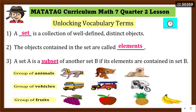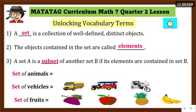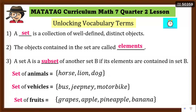Let's revisit the groups of animals, vehicles, and fruits. We can call these: set of animals — elements are horse, lion, dog; set of vehicles — elements are bus, jeepney, and motorbike; and set of fruits — elements are grapes, apple, pineapple, and banana. These objects are what we call elements.